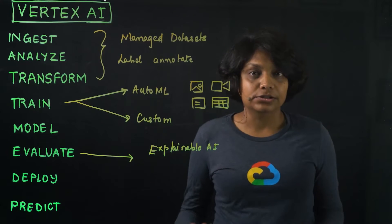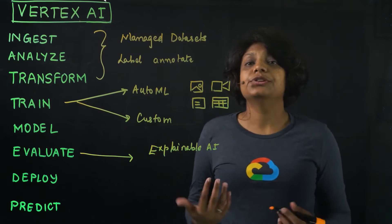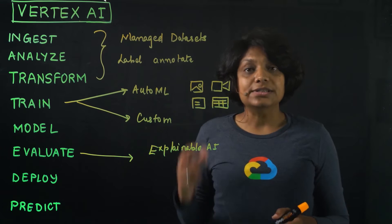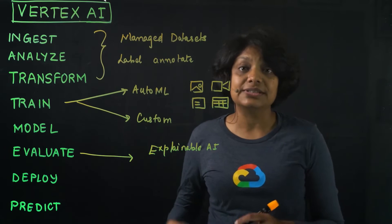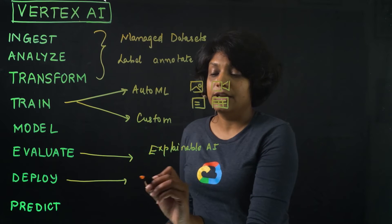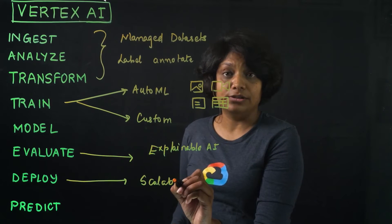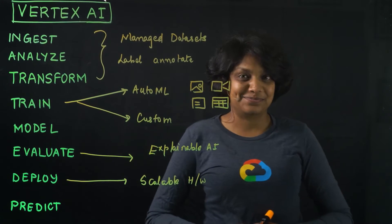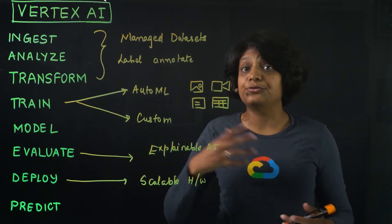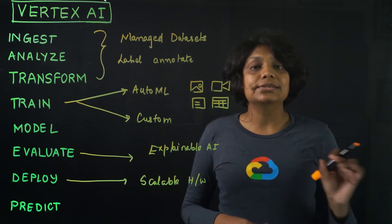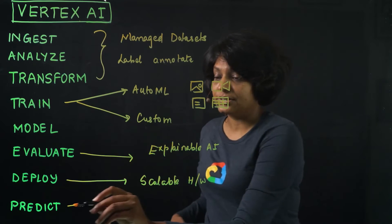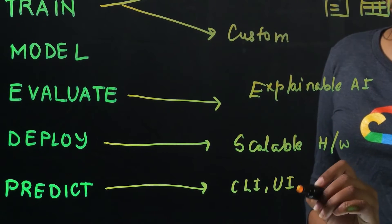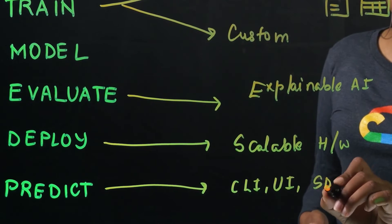Once you're happy with the model, you deploy it to an endpoint to serve it for online predictions using the API or the console. This deployment includes all the physical resources and the scalable hardware needed to scale that model for lower latency and online predictions. You can also use the undeployed model for batch predictions. Once the model is deployed, you can get the predictions using the command line interface, the console UI, or the SDK and APIs.